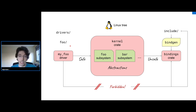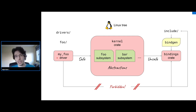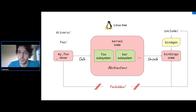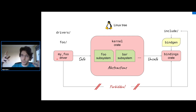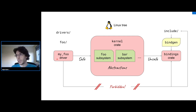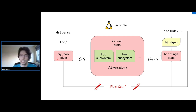The advantage is that leaf modules and drivers, once abstractions exist, can be written with 100% safe code. There may be exceptions — a driver might need unsafe for a hot loop for performance — but in general, safe drivers are achievable.